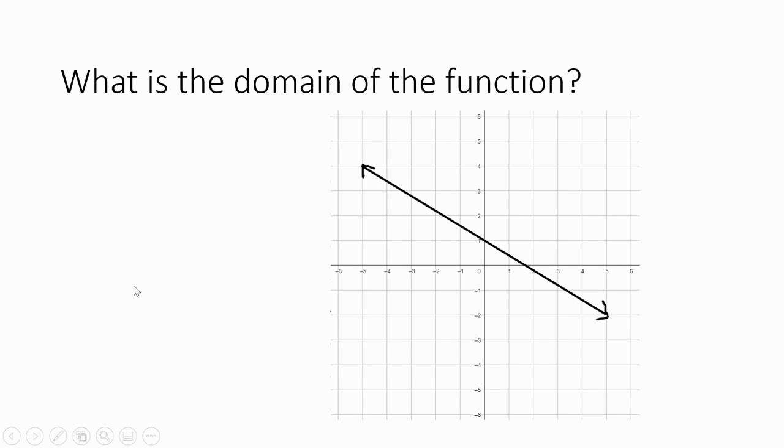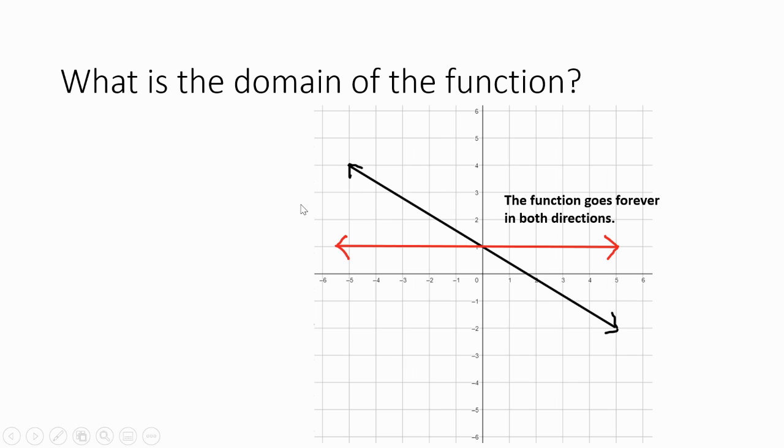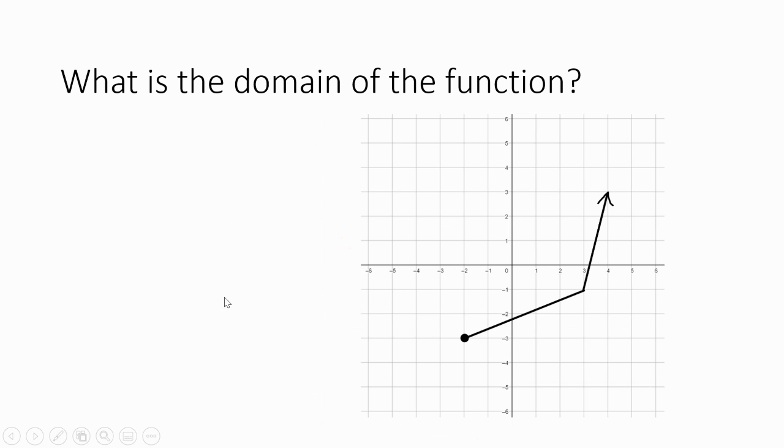Looking at this next one, you notice that this has arrows on the end and it goes forever in both directions. If I was to find what's the biggest x and the smallest x, well from what I can see here is negative five, but this arrow tells me there's really more points over here. This really goes forever in both directions. So the domain is all real numbers—I'm going to go forever in both the x direction. There is no limit.